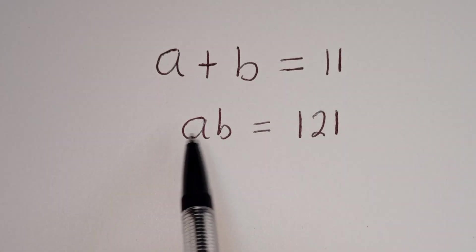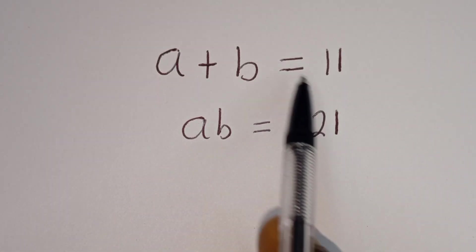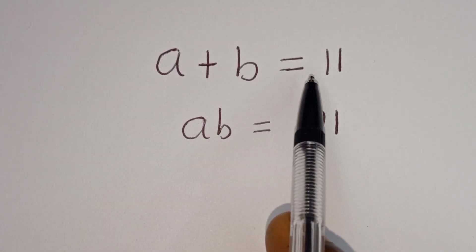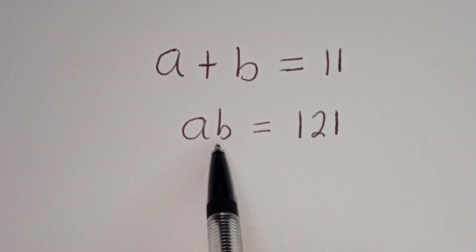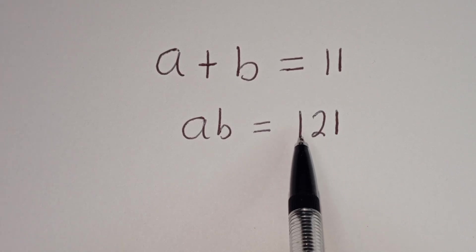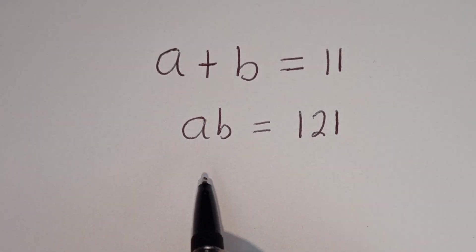Hello. How to solve for A and B in this equation? A plus B is equal to 11. A times B is equal to 121.